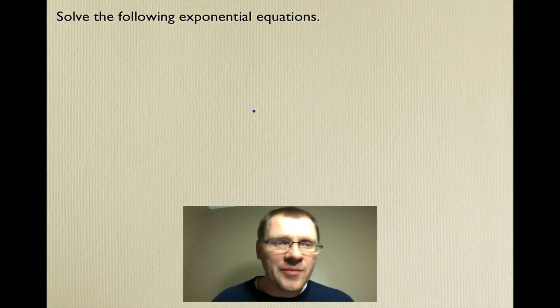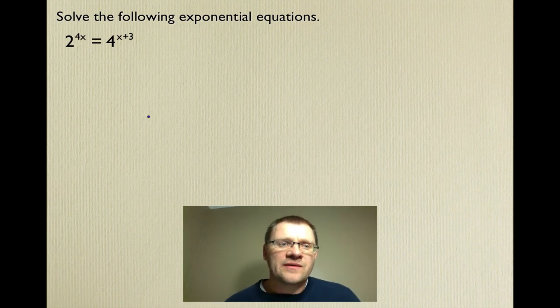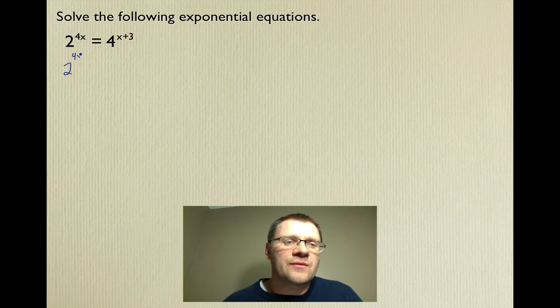So here's our first two examples. It says solve the following exponential equations. So this is 2 to the power of 4x equals 4 to the power of x plus 3. What you want to do, as I said before, is you want to write these with the same base. So the smallest base that both 2 and 4 can be written with is the base of 2. So we're going to rewrite 4 as 2 squared, and that is still raised to the power of x plus 3.